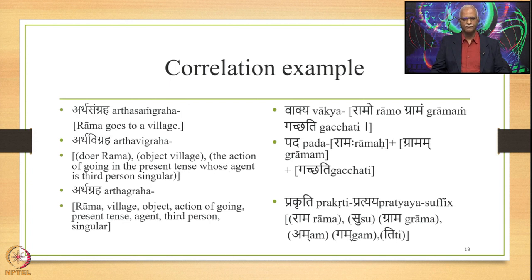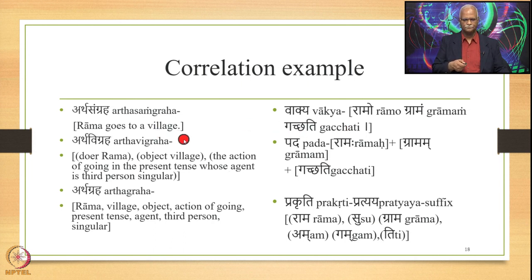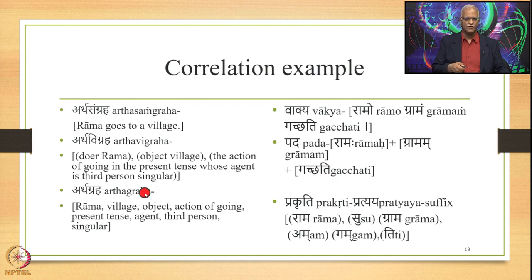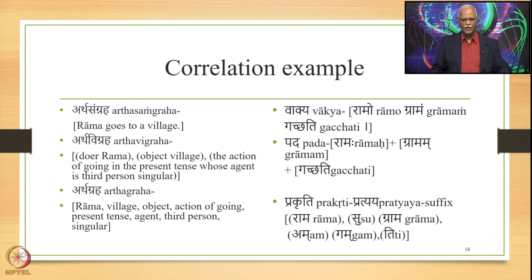The correlation example can be shown as follows. At Artha Sangraha we have 'Rama goes to a village' as one unit; at the level of Vakya in Shabdakasha we have 'Ramo Gramam Gacchati.' Then we have Artha Vigraha: Doer Rama, object village, action of going in the present tense, third person singular. In Shabdakasha the Padas are Ramah, Gramam and Gacchati. Then Artha Graha: Rama, village, object, action of going, present tense, agent, third person, singular — and in Shabdakasha we have Prakriti and Pratyaya: Rama-Su, Grama-Am, Gama-Ti.